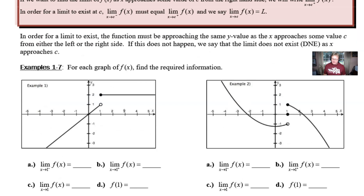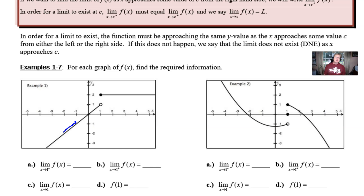We're going to look at four examples in this video, and for each graph of f(x) we'll find the required information. For example 1, part a: as x approaches 1 from the left, what is the limit of f(x)? Approaching from the left, we can see the y-values getting bigger and bigger, eventually becoming just about equivalent to 1. Limits are about the journey, not the destination, so the answer is 1.